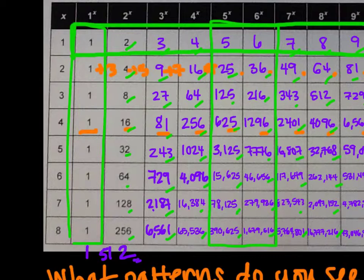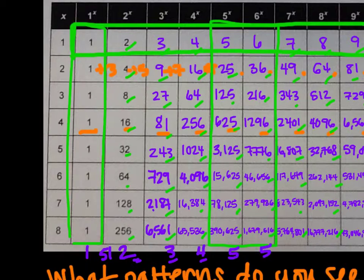For base 3, the cycle is 3, 9, 7, 1, repeating, so the 9th power's ones digit will be a 3. For base 4, the cycle is 4, 6, 4, 6, so 4 to the 9th ends in 4. For base 5, it ends in 5, and for base 6, it ends in 6.